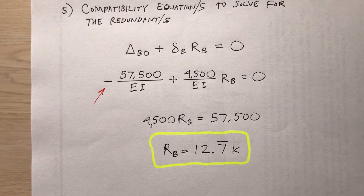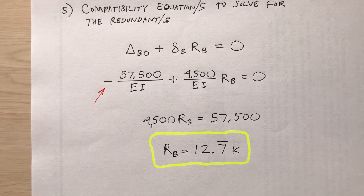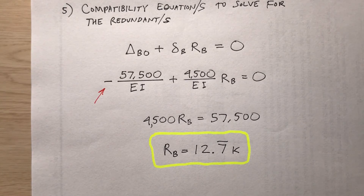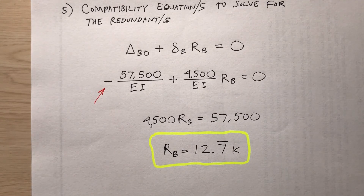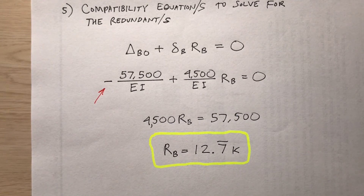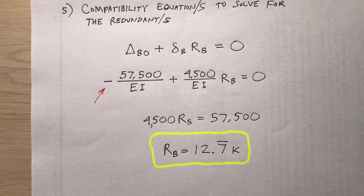If you watched my previous video, I did this same example using the three-moment equation. Did I wind up with the same value for R sub B — 12.7 kips? One way to verify your work is to solve a problem using different methodologies. If you wind up with the same answer, you probably did it correctly. If your numbers differ between methods, then you made a mistake somewhere.